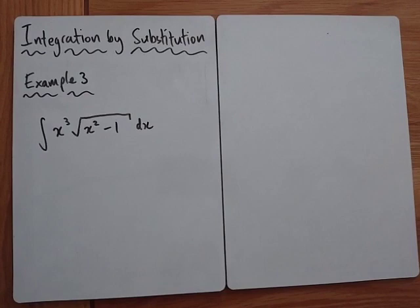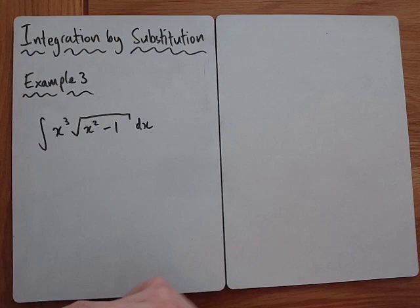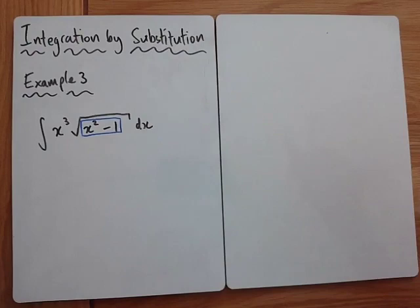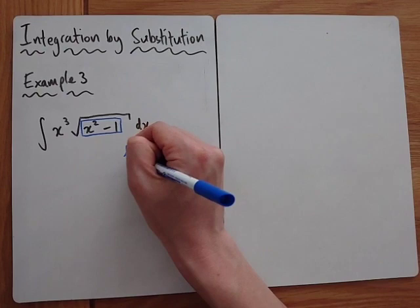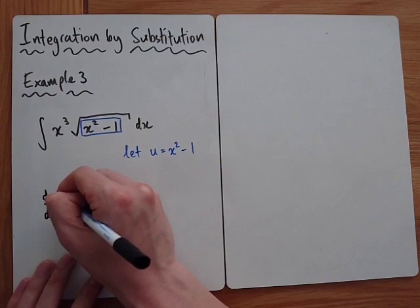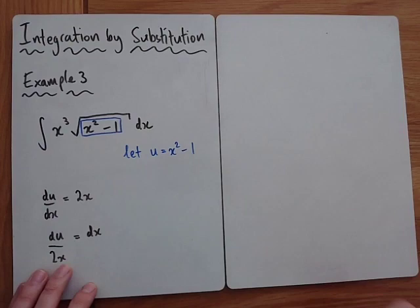Example 3 is the integral of x cubed times the square root of x squared minus 1. You might say it's two things multiplied together — could integration by parts work? It wouldn't. The thing that stands out is the function inside another function which is not linear. So let's let u equal x squared minus 1. Then du/dx equals 2x, which rearranges to dx equals du over 2x.